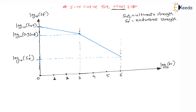It has been observed that after 10⁶ revolutions — say 10⁷ or 10⁸ — the graph becomes asymptotic: it becomes a straight line with no further decrease in strength. For N ≥ 10⁶, the graph becomes asymptotic.